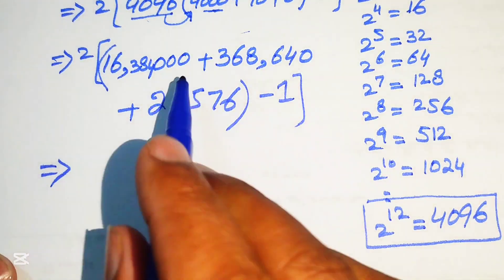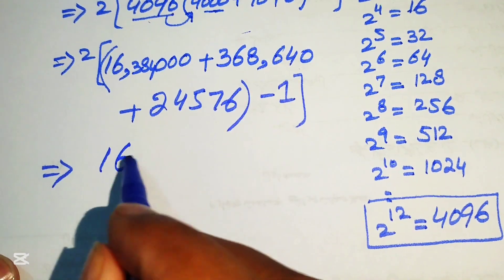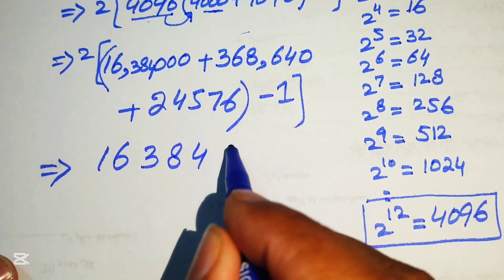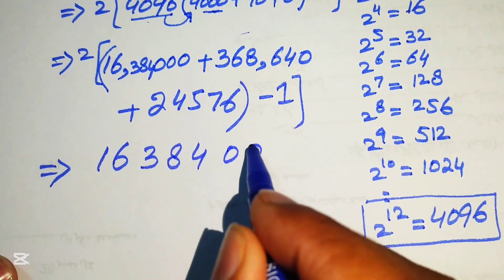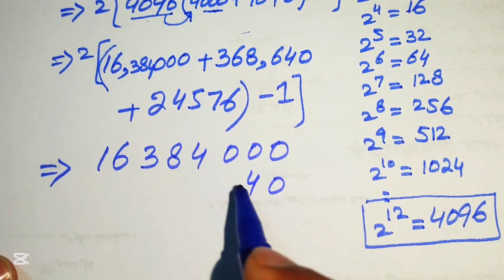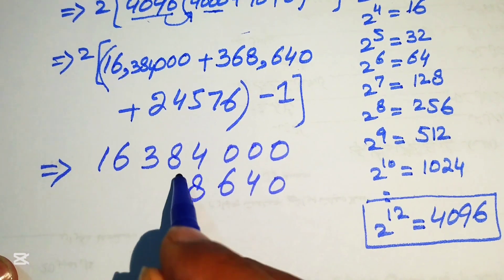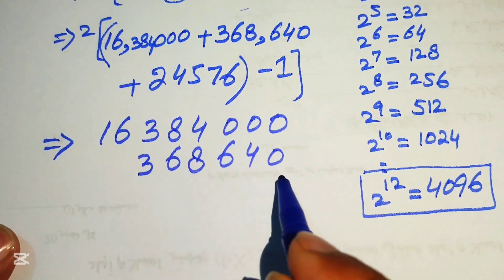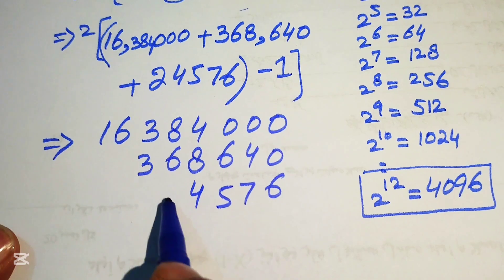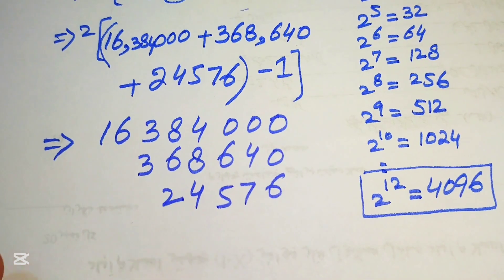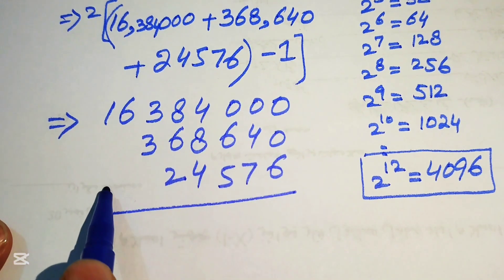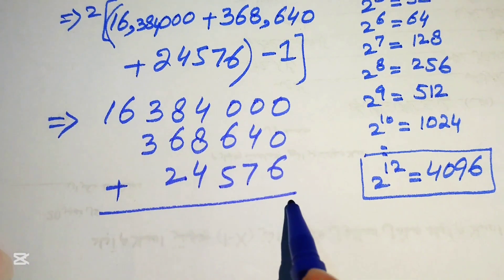We write out the three values for addition: 16,384,000 and 368,640 and 24,576. Now we sum these three values.